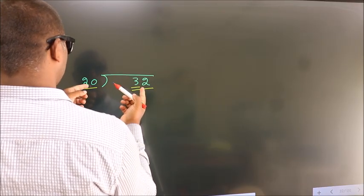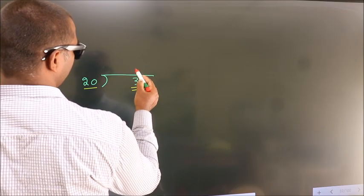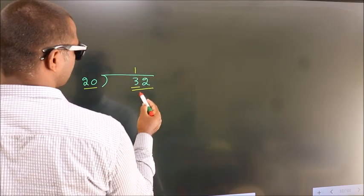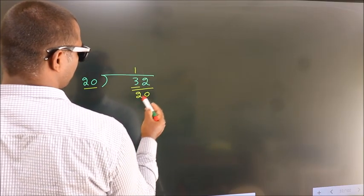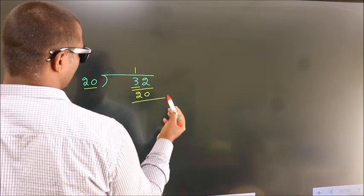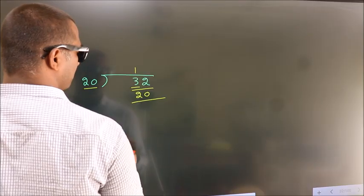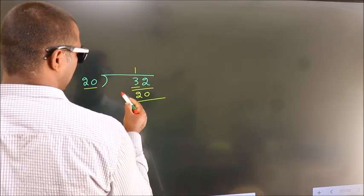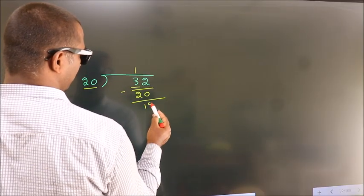In the 20 times table, 20 once is 20. Now we subtract and we get 12.